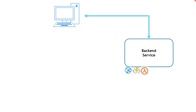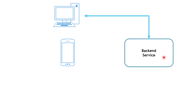Then you have decided that you want to evolve your solution and implement a native mobile app. Be careful here — we are not talking about mobile web, we are talking about a native mobile app version of your solution. And since you have already built the backend service, you are going to connect the mobile app to the backend service you have already implemented.